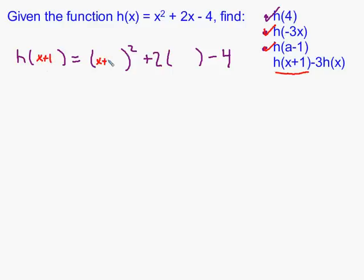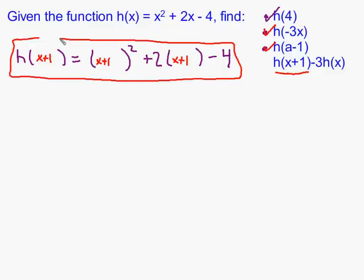I'm going to write it down in unsimplified form first. All of this is h of x plus 1 — wherever you see h of x plus 1, it can be replaced with all of this. Now I have a choice: I can multiply the function h of x by 3, take the result, and subtract. What I'm going to do is find 3 times h of x and then subtract the two quantities.